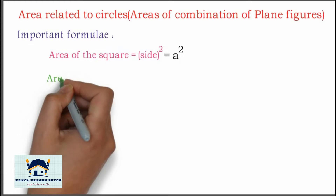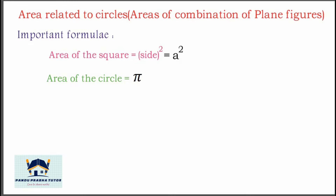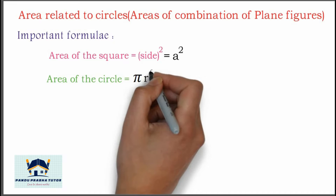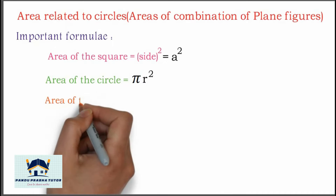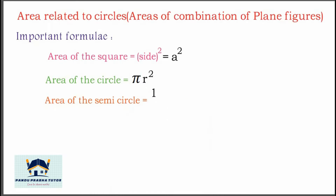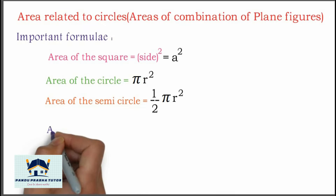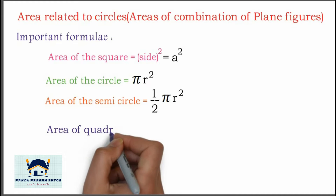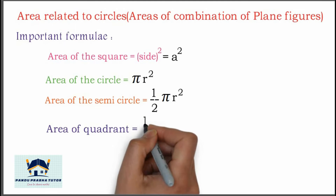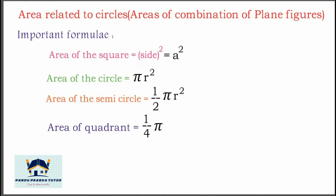Area of a circle is equal to π r squared. Area of a semicircle, that is half of the circle, is 1/2 into π r squared. Area of a quadrant, that is one-fourth of the circle, is 1/4 π r squared.